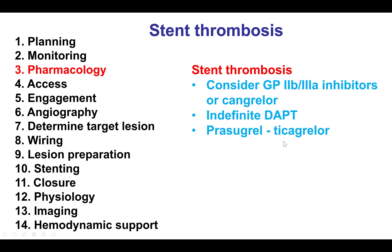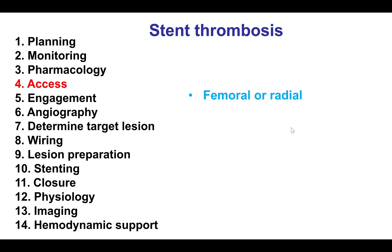After stent thrombosis, most patients receive more potent P2Y12 inhibitors — prasugrel or ticagrelor — often for more than 12 months unless they have high bleeding risk. Both femoral or radial access can be used for ST segment elevation. Radial access is usually preferred, especially if more potent antiplatelet agents are being administered.